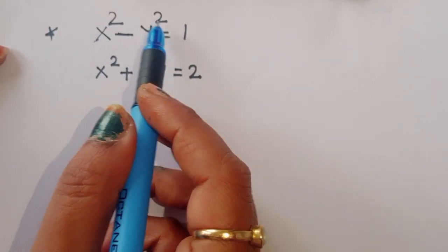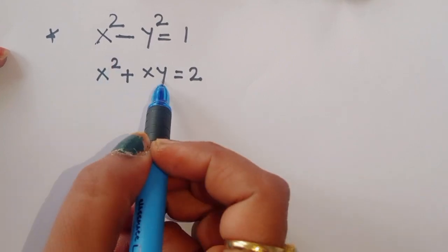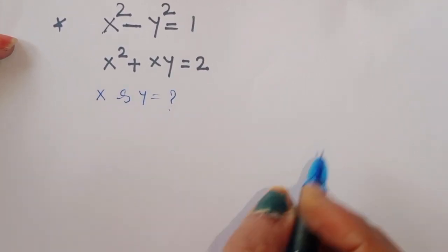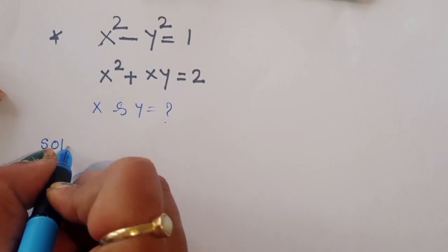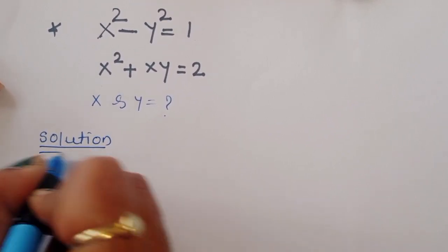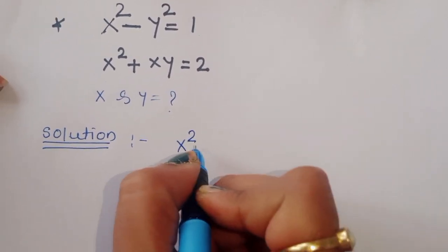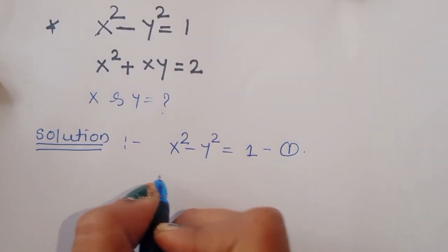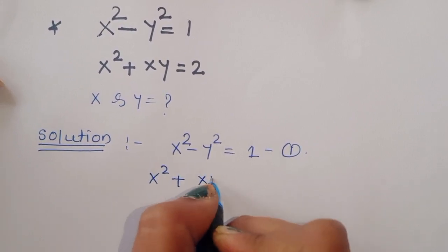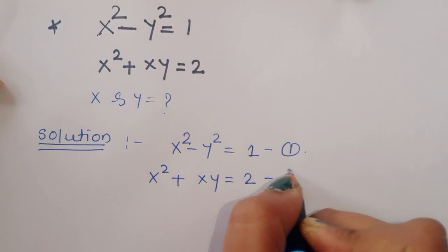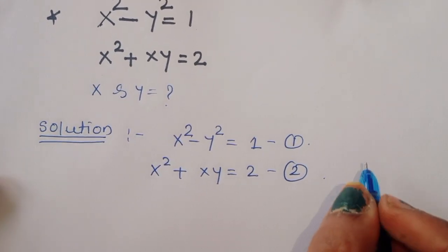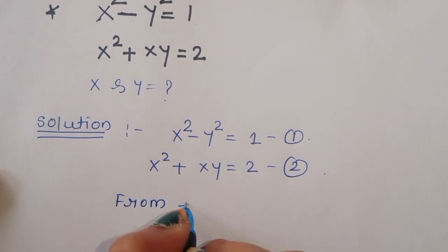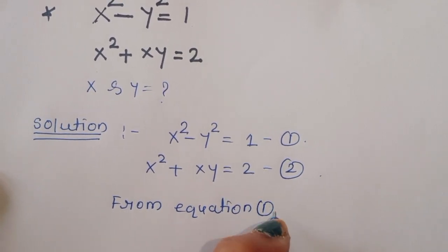Given x squared minus y squared is equal to 1 — this is equation 1 — and x squared plus xy is equal to 2 — this is equation 2. We have to find out the value of x and y.